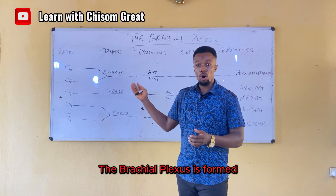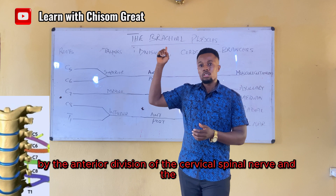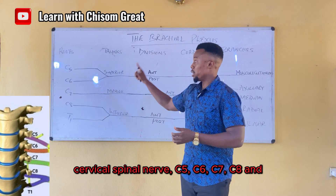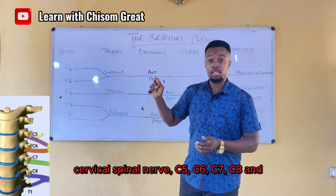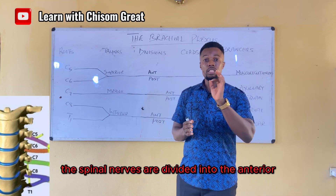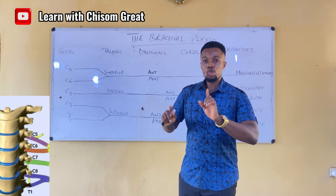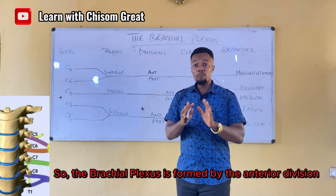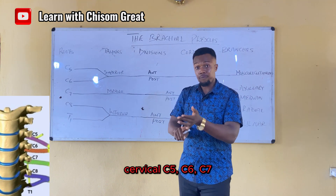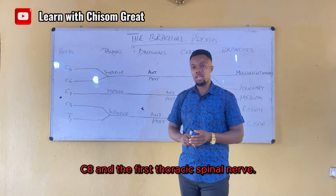The brachial plexus is formed by the anterior division of the cervical spinal nerves — C5, C6, C7, C8 — and the first thoracic nerve. The spinal nerves are divided into the anterior and the posterior division, and the brachial plexus is formed by the anterior division of these cervical spinal nerves: C5, C6, C7, C8, and the first thoracic spinal nerve.